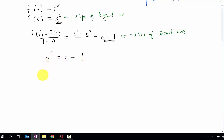That just means taking the natural log of both sides of this equation. The reason we do that is because the natural log and the exponential function cancel out, just leaving us with a c.